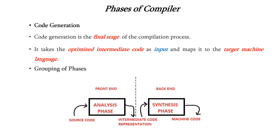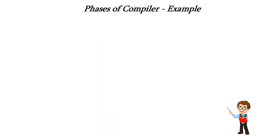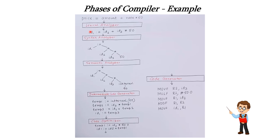Now let us see one example for understanding the phases of compiler. Consider this line of code: price = amount + rate * 50. We assume that all are float variables. This code is fed into the lexical analyzer, which reads it character by character and generates tokens. Price is considered as one identifier, named ID1. The assignment operator is taken as is. Amount is ID2, plus is taken as is, rate is ID3, multiplication symbol is taken as is, and 50 is taken as is.